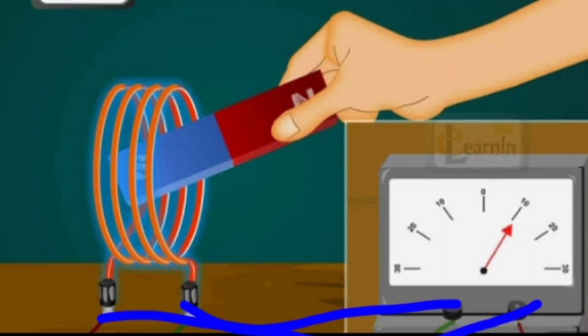What he observed was the needle deflected, meaning current was flowing. That was the conclusion. But on further observation, he noted that when the north pole of the magnet moves towards the coil, the galvanometer shows a deflection towards the right. When moving away, deflection towards the left. When the magnet and coil are stationary, there is no deflection.